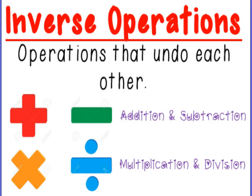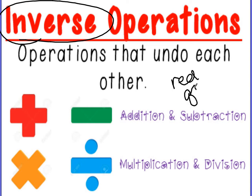So first, what we need to understand is the word inverse. We'll talk about inverse operations in a minute. But the word inverse means opposite, or to undo. So when you're talking about the inverse of something, it's what's going to undo something that you did, or it's going to be the opposite of something that you did. So the inverse of red would be green, or the inverse of up would be down. So again, inverse is like another word for opposite.